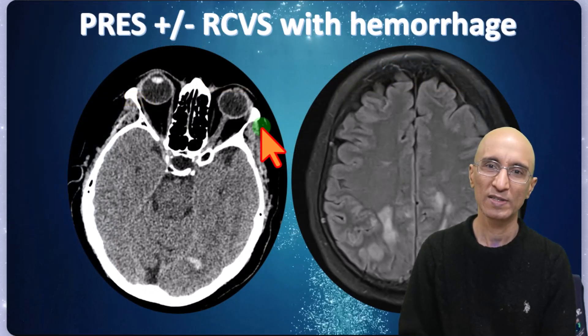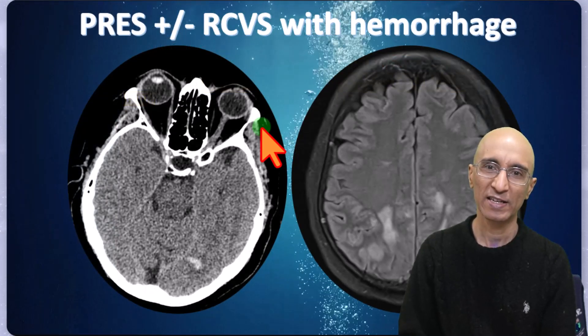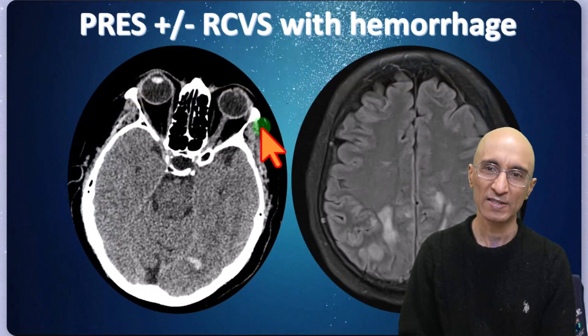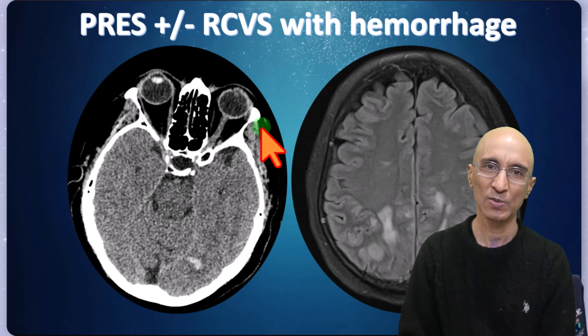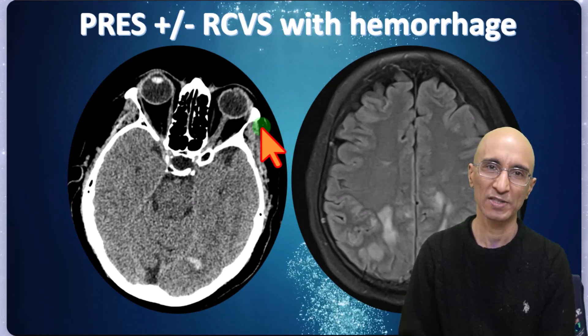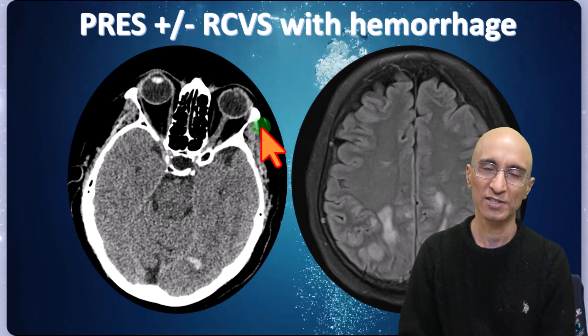I hope you found this an interesting case of PRES and RCVS overlap syndrome with acute hemorrhage. Thanks for your attention.